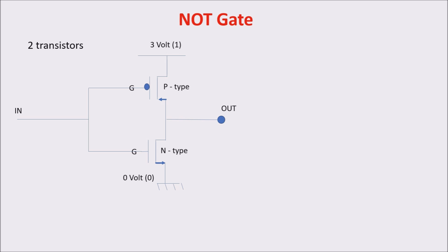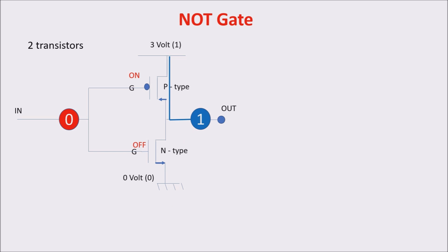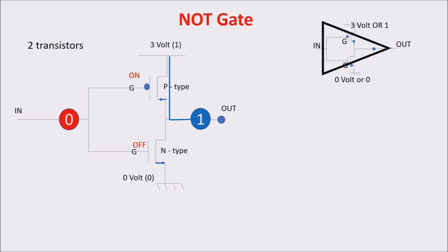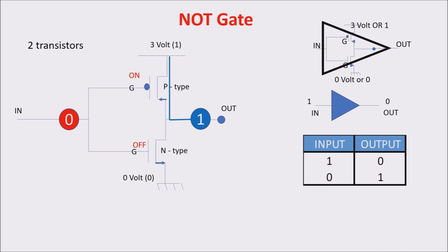Let's see how the gate works. If we put a 1 on the gate, the N-type is ON and becomes a closed circuit, connecting the output with 0, and the P-type is OFF and becomes an open circuit. On the contrary, if we put a 0 on the input, the P-type is ON, thus connecting the output with a higher voltage, our 1. So if there is a 0 in input, the output is 1, and vice versa — if there is a 1 in input, the output is 0. Always the opposite. That's the reason for the name NOT gate or inverter. The truth table shows the output is always inverted with respect to the input.